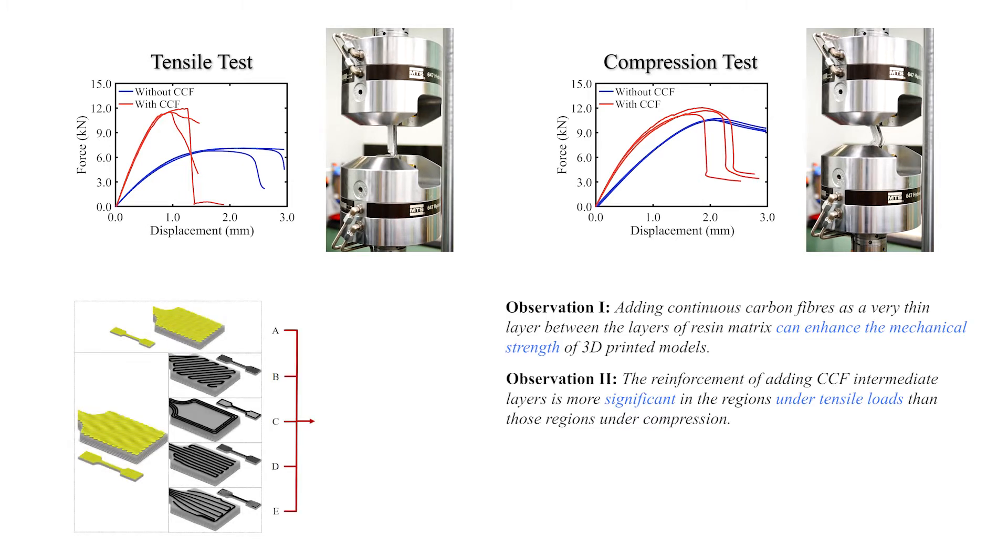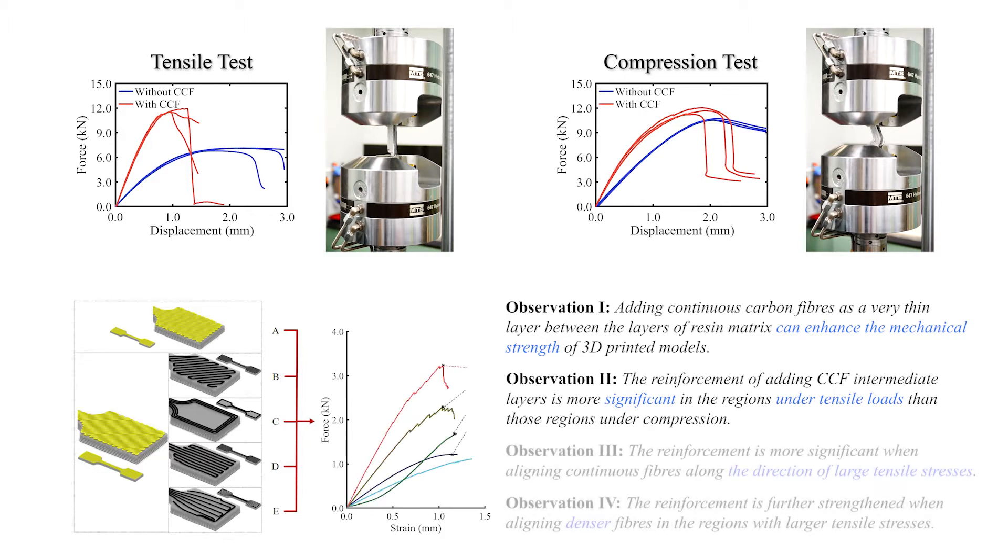When using the same amount of continuous carbon fiber, the reinforcement is more significant when allowing continuous fibers along the direction of large tensile stresses and also with the density adaptive to the stress distribution. Based on these observations,